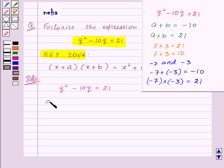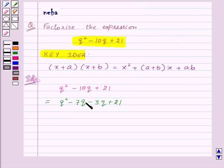So, the given expression can be written as q squared minus 7q minus 3q plus 21. Now, in first two terms, the factor q is common and in the last two terms, the factor 3 is common.